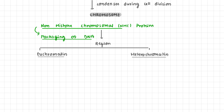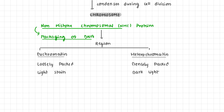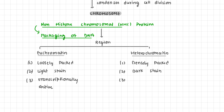Euchromatin refers to regions of chromatin that are loosely packed — loosely packed, light in stain, and transcriptionally active. Heterochromatin, on the other hand, is densely packed, dark in stain, and transcriptionally inactive.